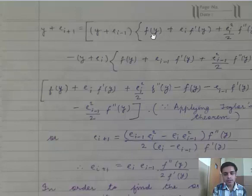For example, f(xi) becomes f(y) plus ei times f'(y) plus ei squared by 2 times f''(y) and similarly here.